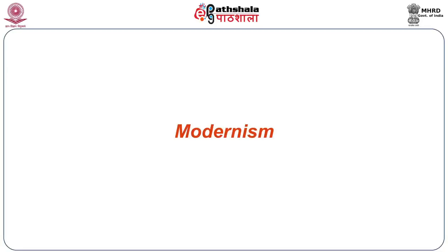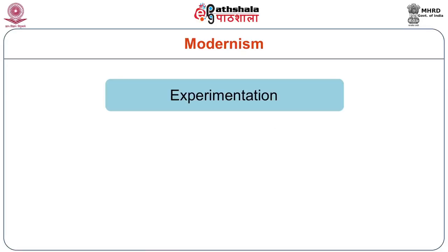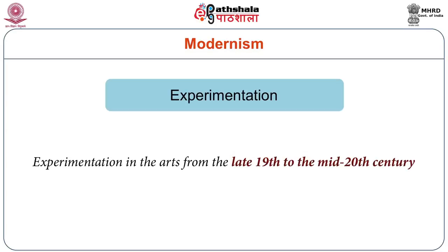Let's try to look at some of the features of modernism and list out three or four of them. When we talk about modernism, we need to be aware that it was an experimentation in the arts from the late 19th to the mid-20th century. Like any movement, it also had a lifespan.